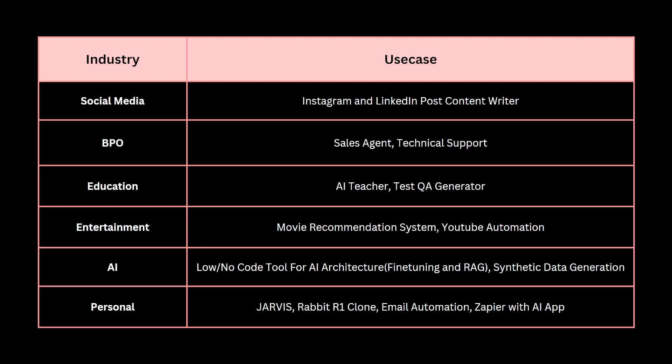Finally, under the personal industry — focused on making your life easier — the first use case is Jarvis to automate anything on your computer. The second is a Rabbit R1 clone that will be open-source and free. The third is email automation that creates drafts so you just click send. And finally, an AI app with Zapier integration to communicate with 6,000 plus APIs including Gmail and Google Drive.